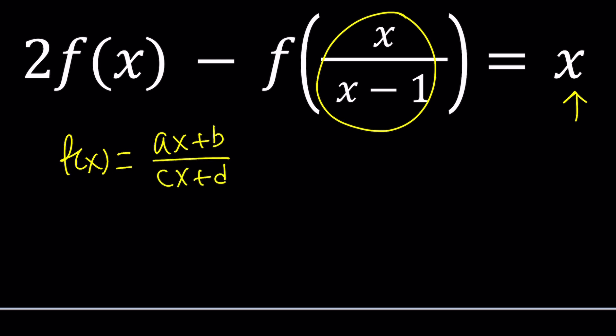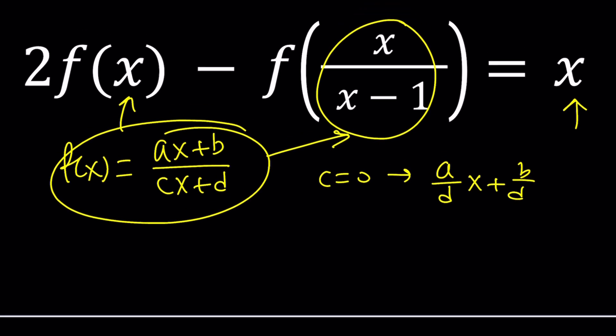Now this still includes linear functions because if c is 0 then we get a over d times x plus b over d which is basically linear. Make sense? So that's good. It's more encompassing. Now you can go ahead and plug it in. Evaluating this will be a bit painful but let's go ahead and see what we can do.